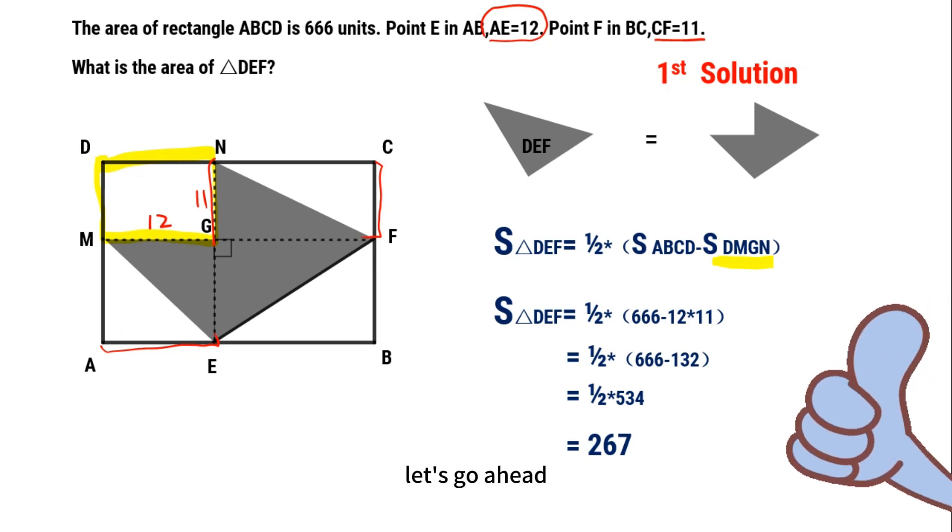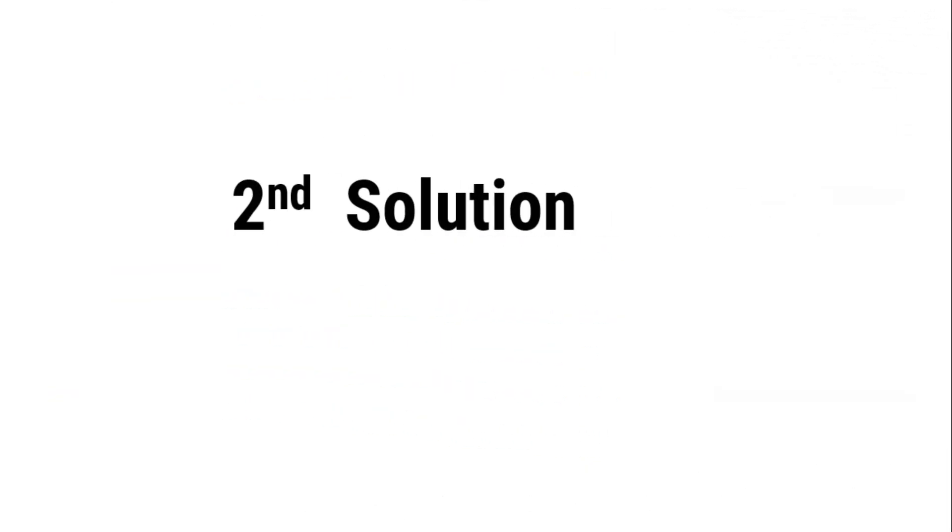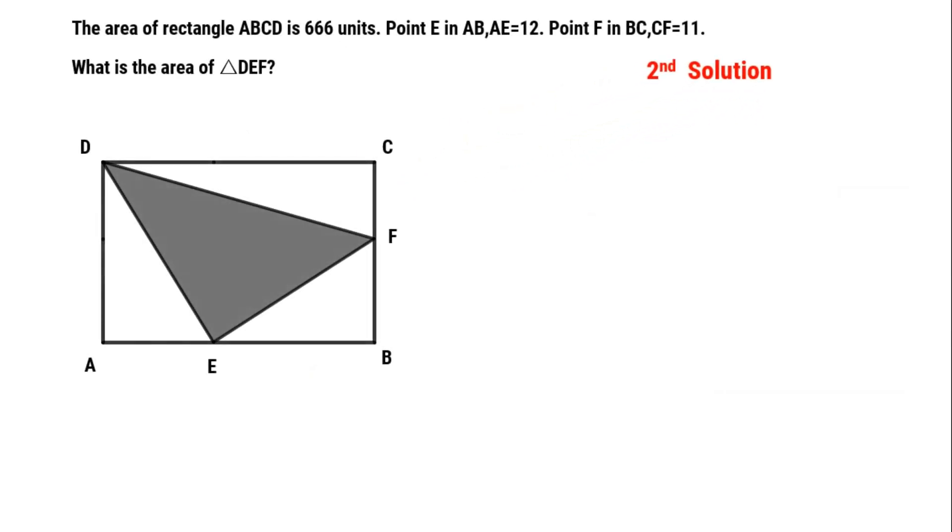Let's go ahead. Find the second solution. Through point E, make a perpendicular segment to DC, intersect in point H. Connect FH.